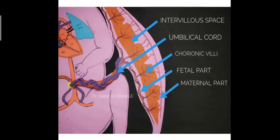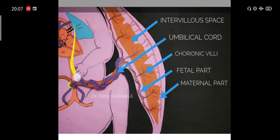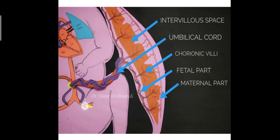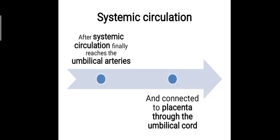After the systemic circulation, the blood reaches the common iliac arteries, from which two umbilical arteries are formed. These carry the blood through the umbilical cord back to the placenta, completing the cycle.